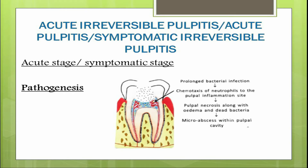The first is acute irreversible pulpitis. There is prolonged pulpal bacterial inflammation with chemotaxis of neutrophils to the site and an inflammatory exudate formed within the pulp. This exudate accumulates, increasing intrapulpal pressure, causing local collapse of the venous circulation and localized loss of oxygenation to pulpal tissues, especially in the center. This leads to tissue hypoxia or anoxia, localized destruction, and formation of small pulp abscesses containing pus from breakdown of leukocytes, bacteria, and disintegrated tissues.